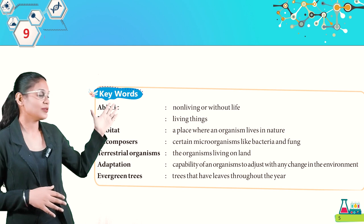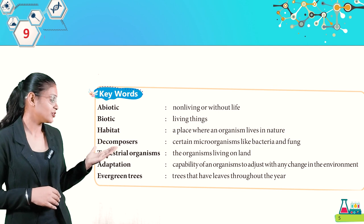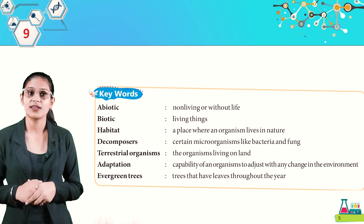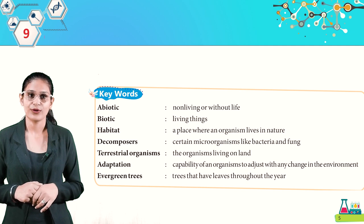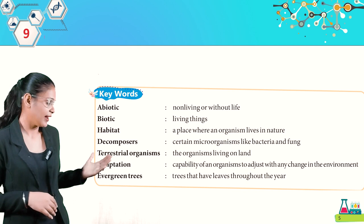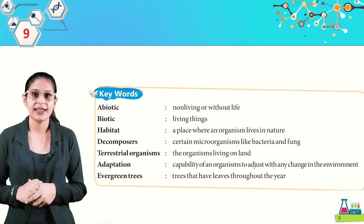Key vocabulary: Abiotic — non-living or without life. Biotic — living things. Habitat — a place where an organism lives in nature. Decomposers — microorganisms like bacteria and fungi. Terrestrial organisms — organisms living on land. Adaptations — the capability of an organism to adjust with any change in the environment. Evergreen trees — trees that have leaves throughout the year.